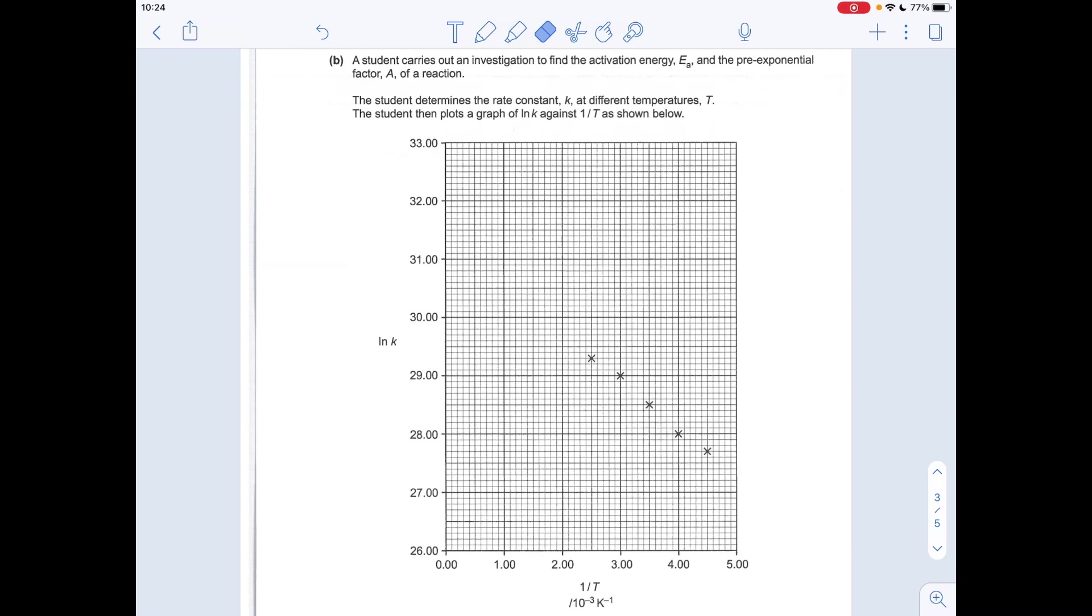So moving on to the Arrhenius graph now, first thing we've got to do is draw a line of best fit. So I'll just do that now. So there's my line of best fit there. Obviously, there's going to be slight variation on how you decide where the line of best fit should be. So there's always a range allowed for the exam. So don't worry too much about that. As long as you've drawn a decent line of best fit, you'll be fine.